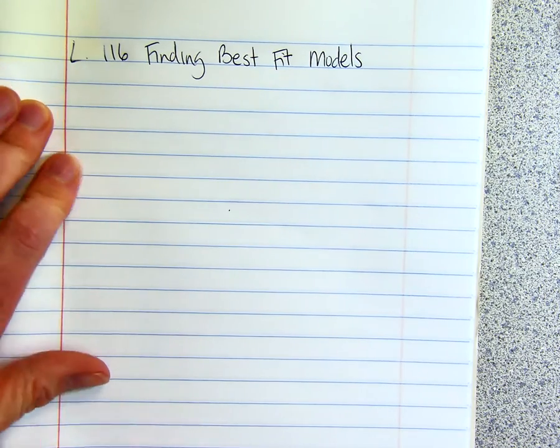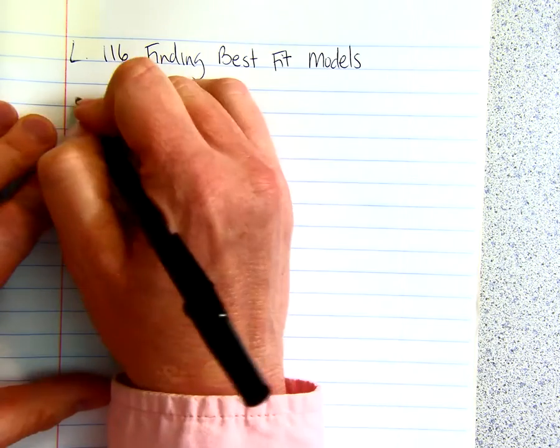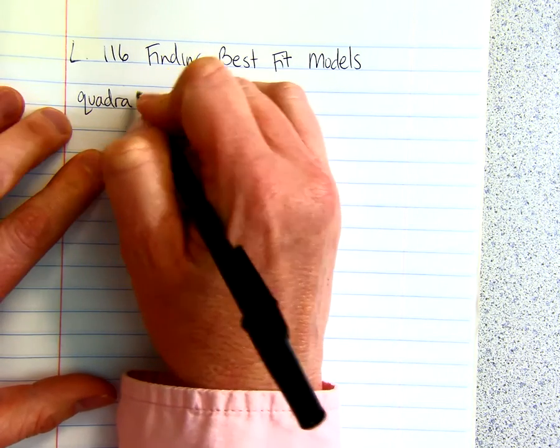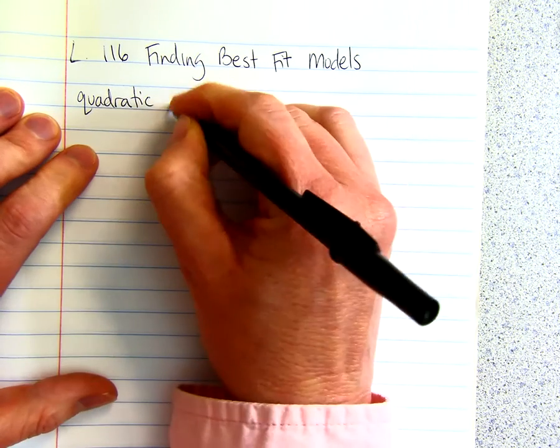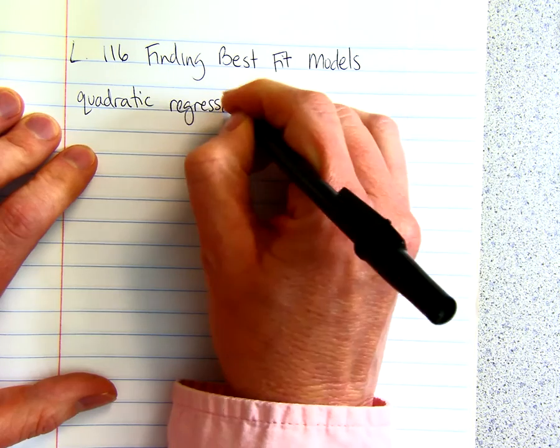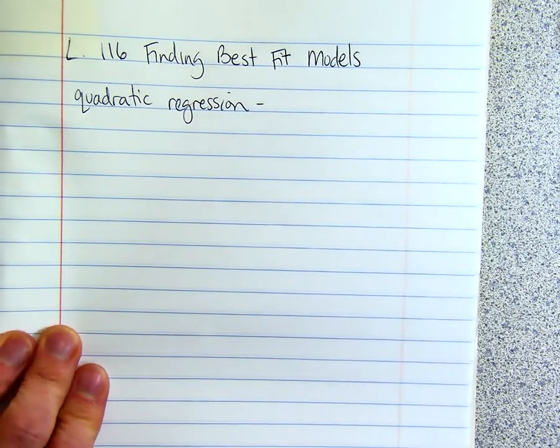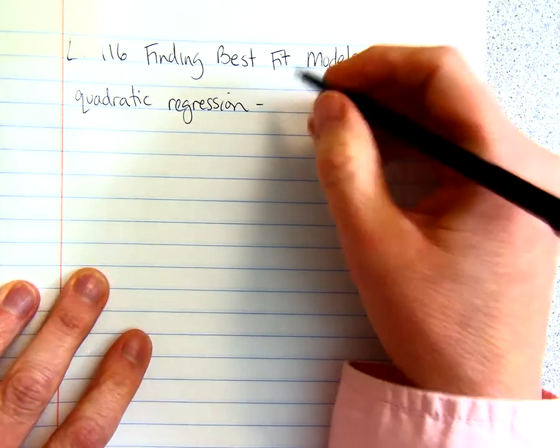This is for any kind of best fit. So we can have a quadratic best fit. So it's called a quadratic regression. You know, in your calculator, we've done a linear regression model. We can do a quadratic regression model.